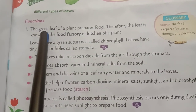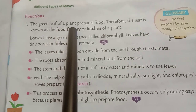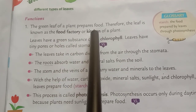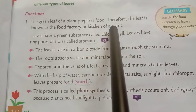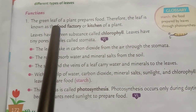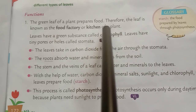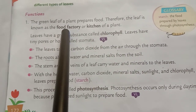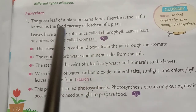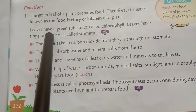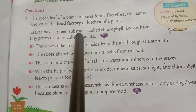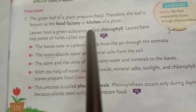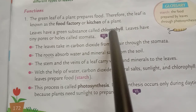What are the functions of leaves? The green leaves of a plant prepare food. Therefore, the leaf is known as the food factory or kitchen of a plant. Leaves have a green substance called chlorophyll.